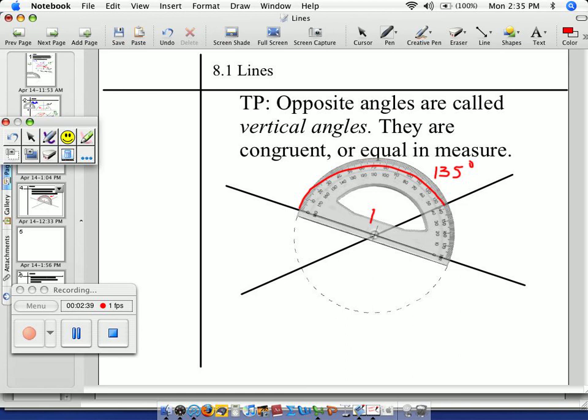So this is 135 degrees. If that's the measure of angle one, what's the measure of angle three? Same. Lo mismo. This is going to be 135 degrees. Cool? Cool.